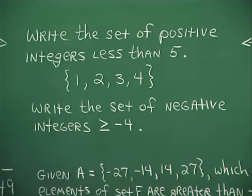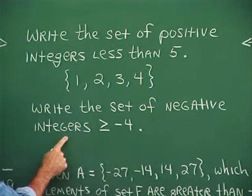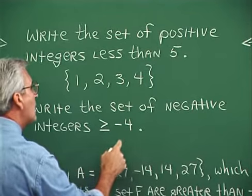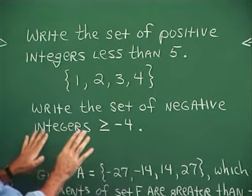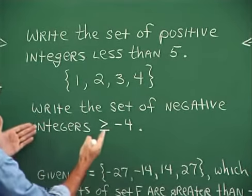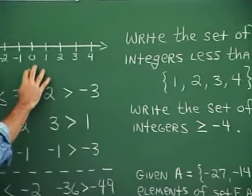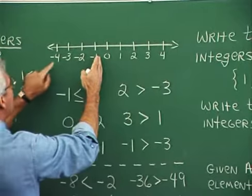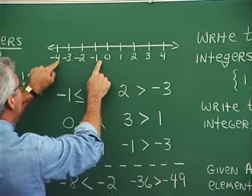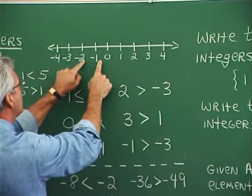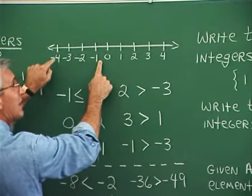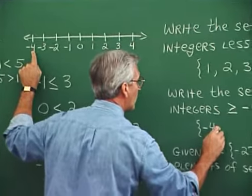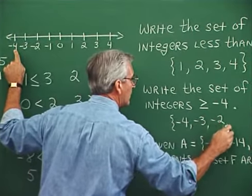How about the set of negative integers greater than or equal to negative four? To help with this process, if there's any confusion, imagine or draw a number line. We want negative integers greater than or equal to negative four — that would include negative four, negative three, negative two, and negative one. All of these are negative and they're greater than or equal to negative four. So the set contains negative four, negative three, negative two, and negative one.